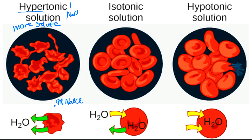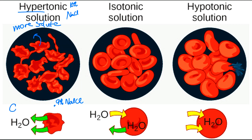In a hypertonic solution, since sodium chloride can't diffuse across the membrane, water moves to try to equalize the difference in solute. Water always moves to the hypertonic environment — where there's more solute. So water moves out of the cell into the solution, and we end up with deflated cells. This is called crenation, or the cells have become crenated.